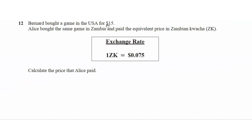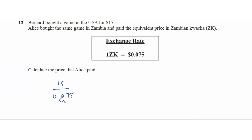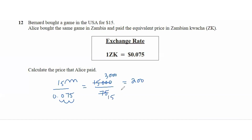Question 12: Bernard bought a game in the USA for $15. Alice bought the same game in Zambia and paid the equivalent price in Zambian kwacha, where 1 Zambian kwacha equals $0.075. To find the price Alice paid, we divide 15 by 0.075 — move the decimal three places to the right: 15,000 divided by 75. Both are divisible by 5, giving 3,000 over 15, then 200. So 200 kwacha is the answer.